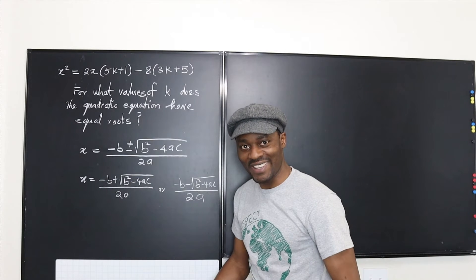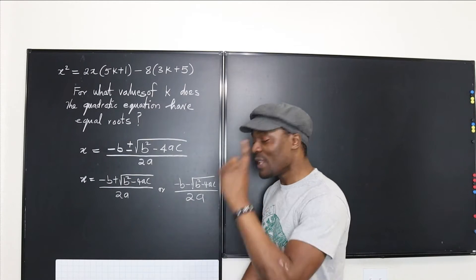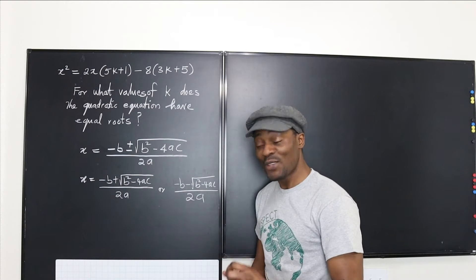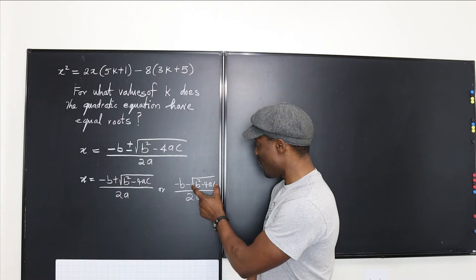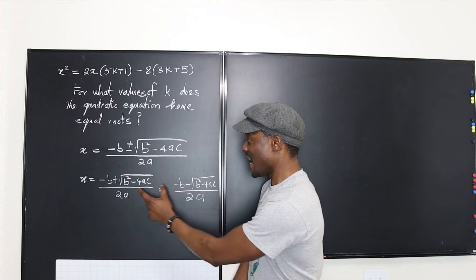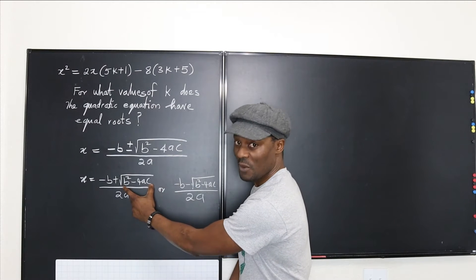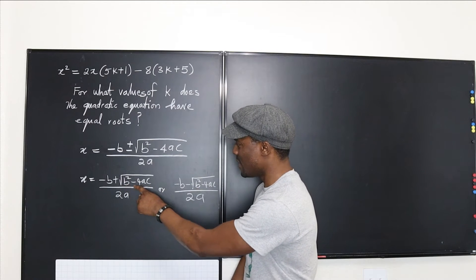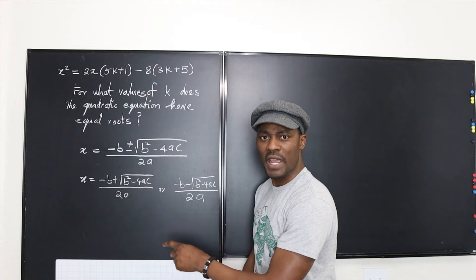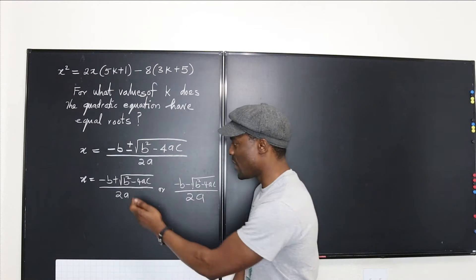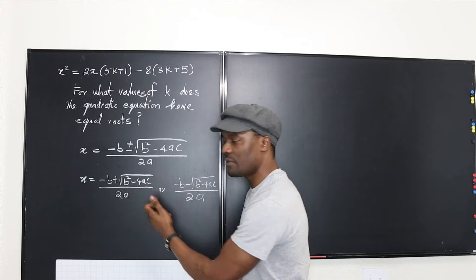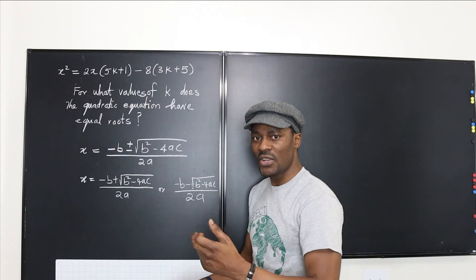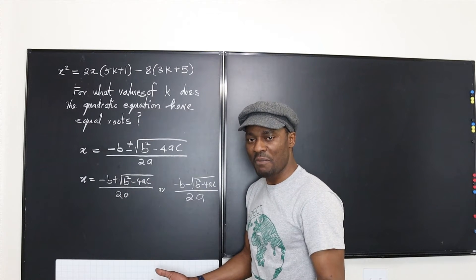You're still going to be left with minus b. So the only time you're going to have equal roots is if what comes out of the square root operation is zero — and the only way that happens is if b squared is equal to 4ac, so that when you subtract 4ac from b squared, you get zero.